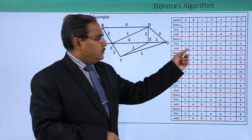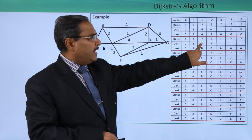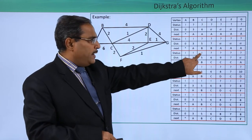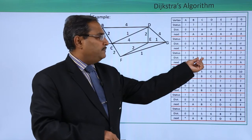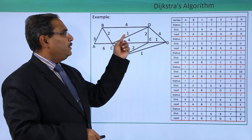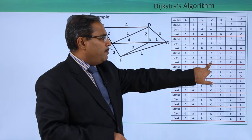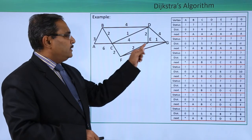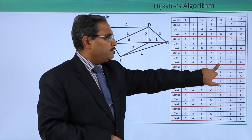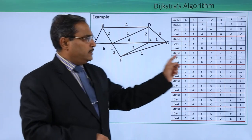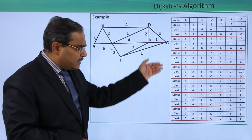In the next iteration, the '?' vertices have distances 5, 7, and infinities. The minimum is 5, which is vertex C, so C becomes v* with status '!'. From C: C to D has distance 1, so 5 + 1 = 6, which is less than 7, so we update dist[D] = 6 measured from C. C to E has distance 4, so 5 + 4 = 9 (less than infinity), written measured from C. C to F has distance 2, so 5 + 2 = 7 (less than infinity), written measured from C.